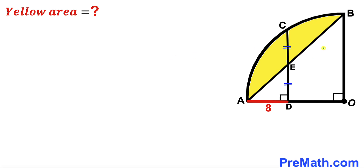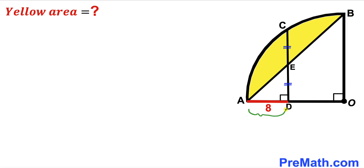Welcome to pre-math. In this video we have a chord AB and a perpendicular CD fully confined in a quarter circle with center O, such that they intersect each other at point E, with segment CE equal to segment DE. Moreover, segment AD is 8 units, and our task is to calculate the area of the yellow shaded region.